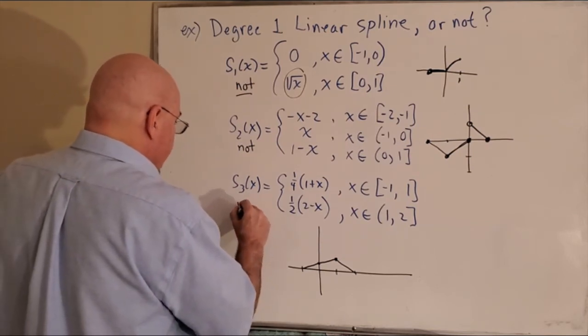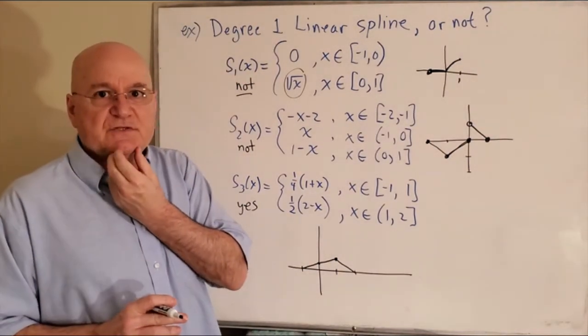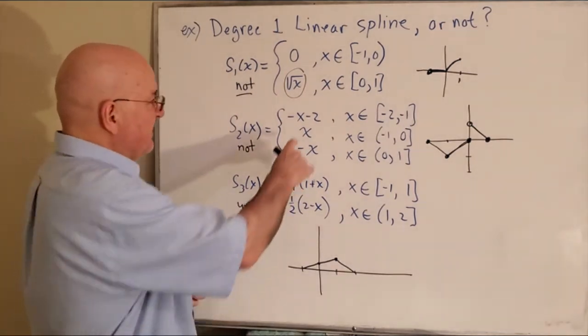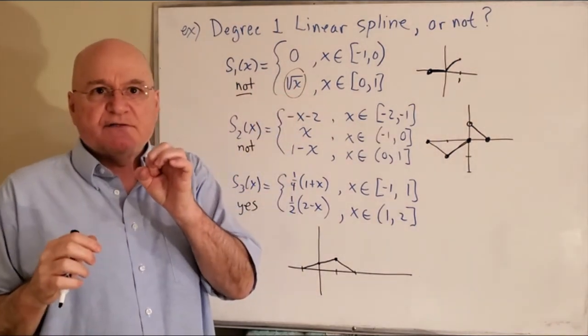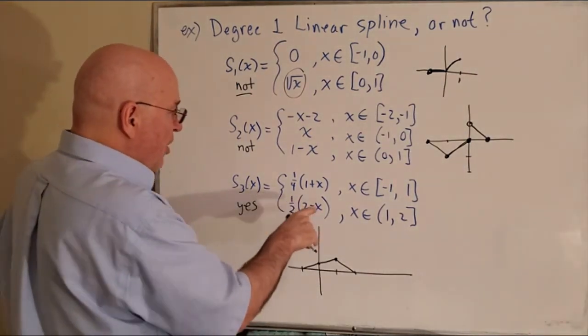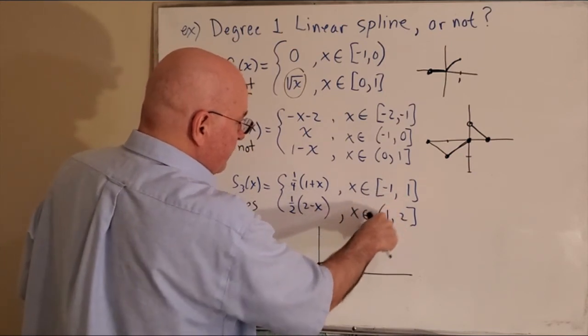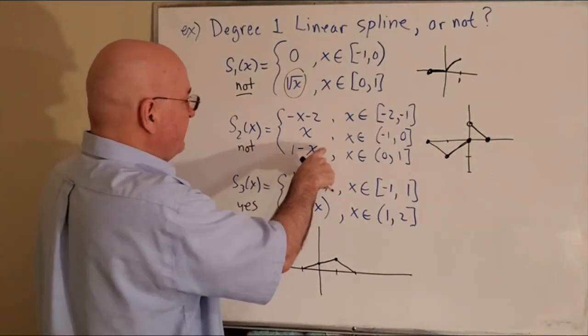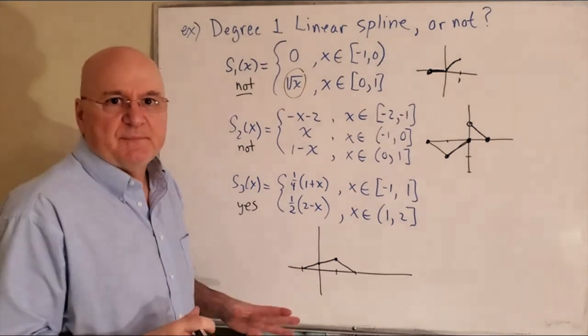So yeah, that is all you really need to verify if you're given something and you're asked if it's a degree one spline. Make sure that each one of these things is linear - like this, this, this, this, this, and this, not this one - and then at each knot, which is each internal point, make sure that the two segments meet there. So all I needed to do - I know that's a line, I know that's a line - so where do they meet? They meet at x equals one. So when I plug in one to this function and one into this function, I better get the same value. And I do in this case, but I do not in this case here where we have different values. So fairly easy examples. It'll be easy homework problems for you.